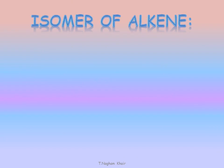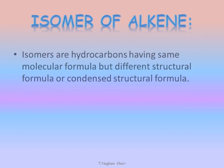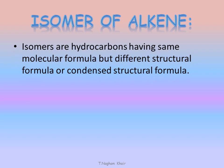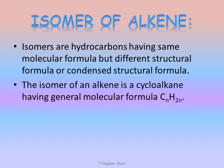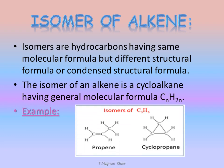Now, which of the hydrocarbons is considered an isomer for an alkene? As we said before, isomers are hydrocarbons having the same molecular formula but different structural or condensed structural formula. So, the isomer of an alkene is a cycloalkane having the same molecular formula CnH2n. For example, propene has the molecular formula C3H6, and C3H6 can also be written as cyclopropane. Both of them are isomers.